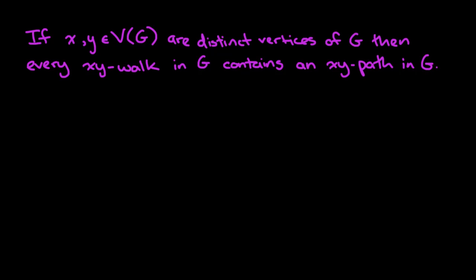What we'll do in this video is show that if X and Y are two distinct vertices of a graph G, then every XY walk in G contains an XY path. Remember that a walk can have repeated vertices and repeated edges, and a path cannot. So let's go ahead and see how we might do this.